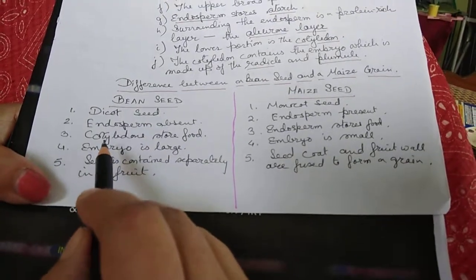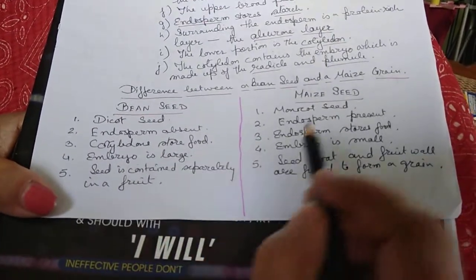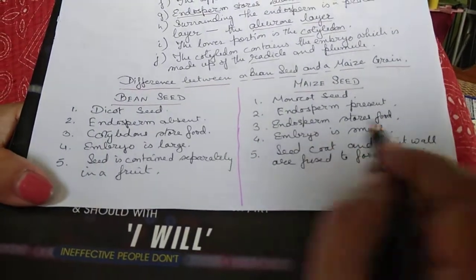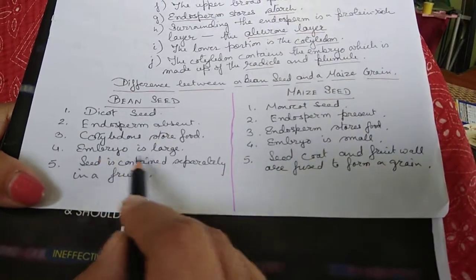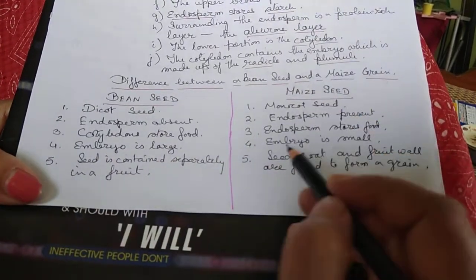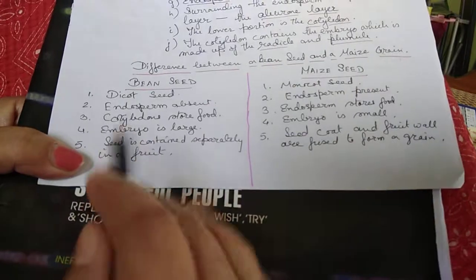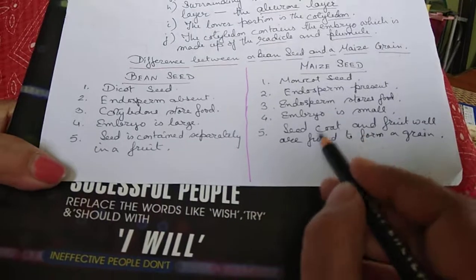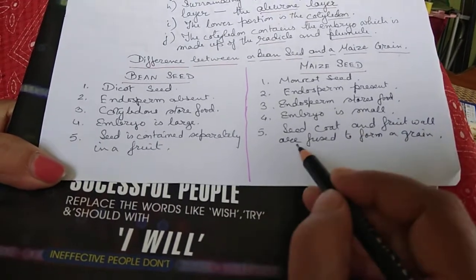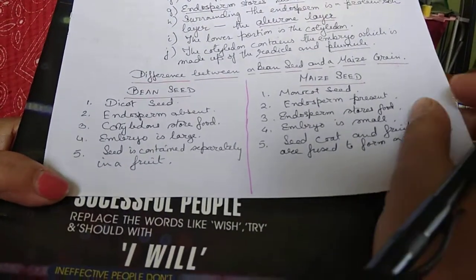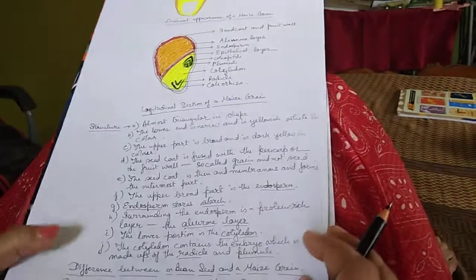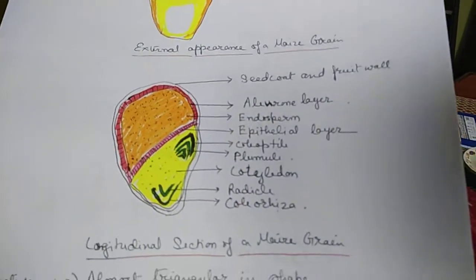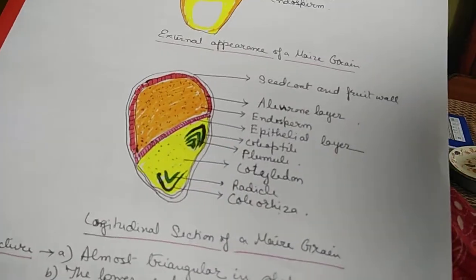In the bean seed, the cotyledon stores food; in the maize seed, the endosperm stores the food. In the bean seed, the embryo is large; in the maize seed, the embryo is small. In the bean seed, the seed is contained separately within a fruit; in the maize grain, the seed coat and fruit wall are fused. This concludes the topic of the seed; the next topic will be germination.